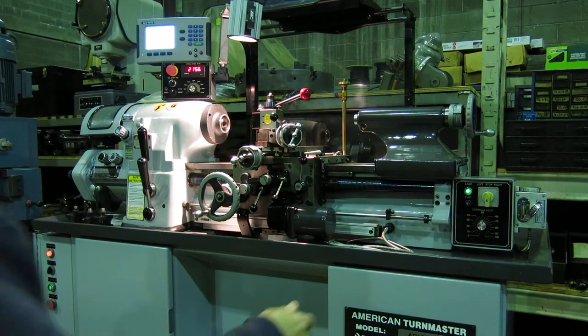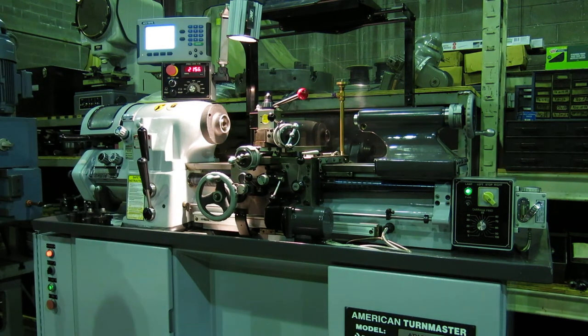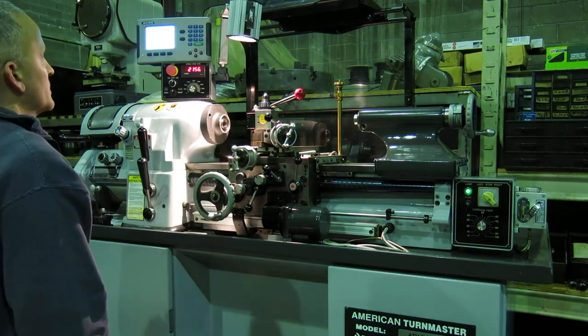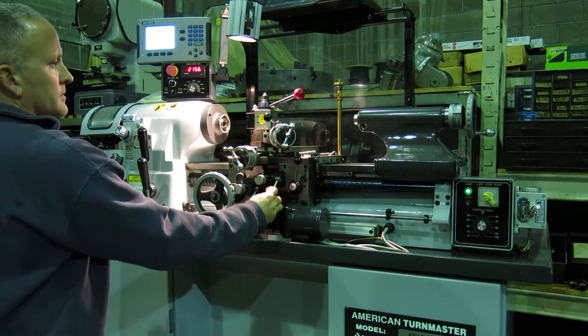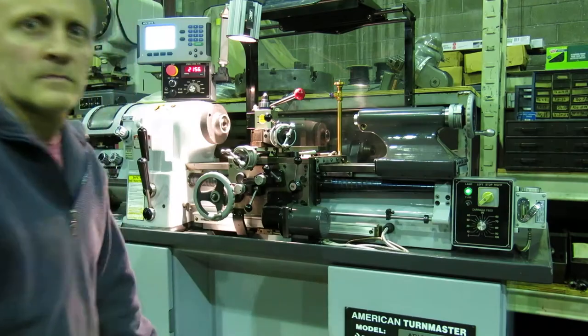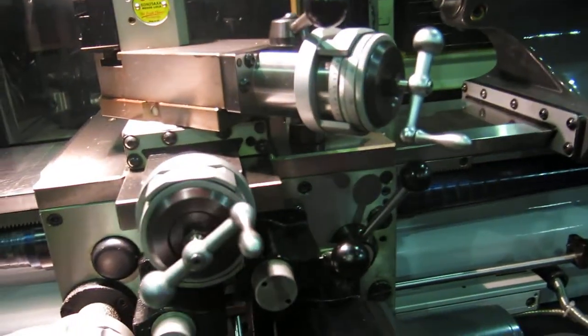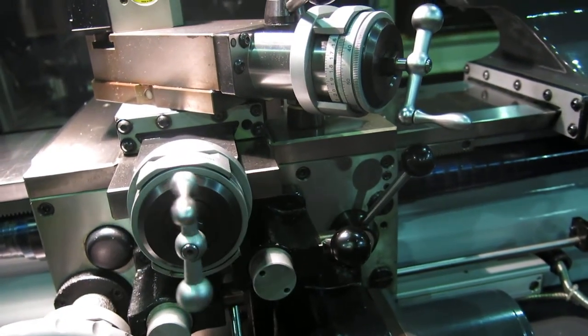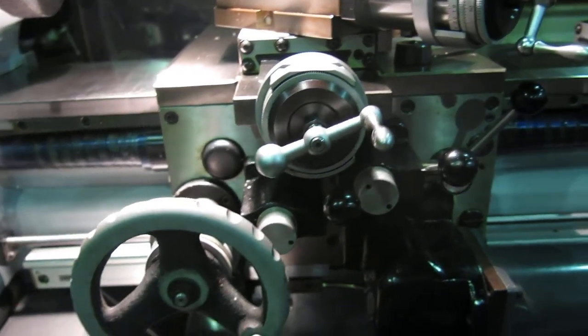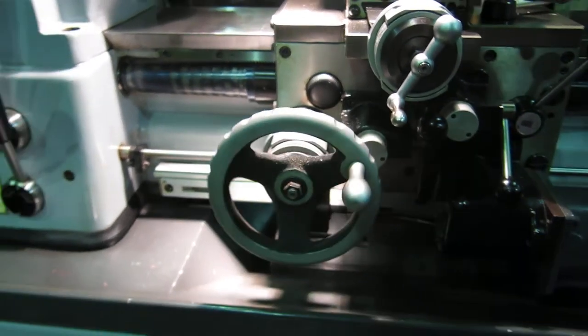We'll feed the carriage toward the headstock. Cross slide feeding out, cross slide feeding in. We can vary the speed of that. With the carriage, we can speed it up or we can slow it down.